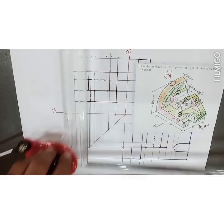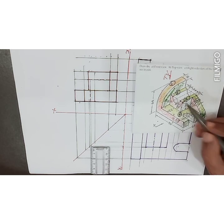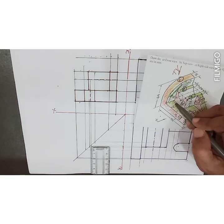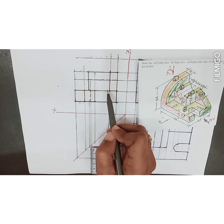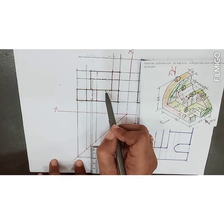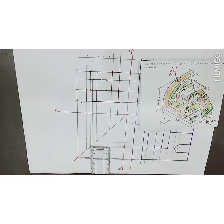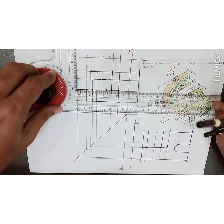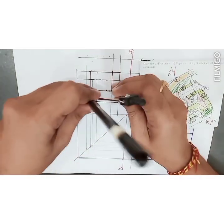This is the center line. The hole, rectangles, and semicircle are drawn. Only the arc is left. The radius given for the arc is 48. From one end to the other is 64 total breadth. We locate a point at a distance of 48 from this end, and with radius 48 we draw the arc. Drawing the front view, top view, and side view is now completed.